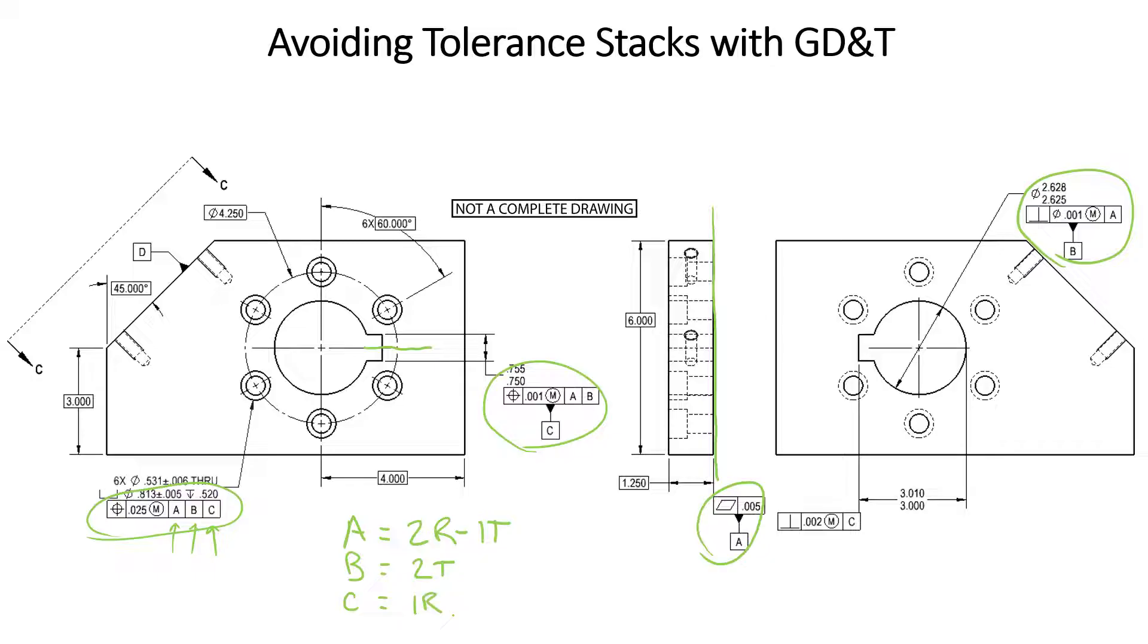Now that our part is fully constrained to the datum reference frame A, B, and C, we know that when we check the position of this bolt hole, or any of the other six bolt holes, they will be in respect to datum feature A, B, and C respectively. There's no assumptions to be made, and the location of the outside of this part can be controlled to the bore hole separately.